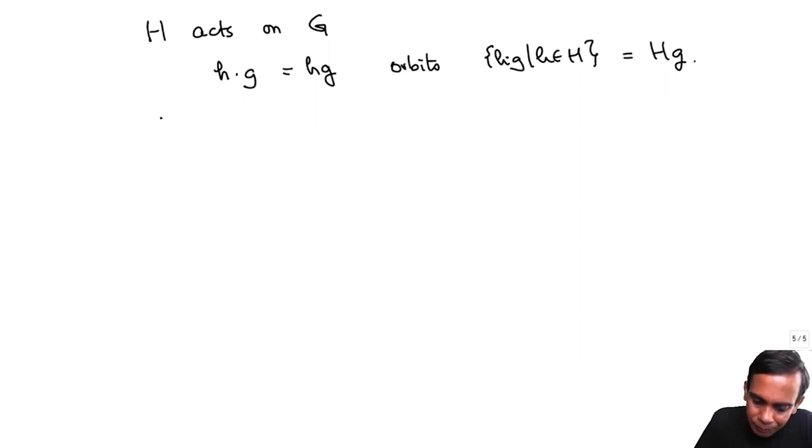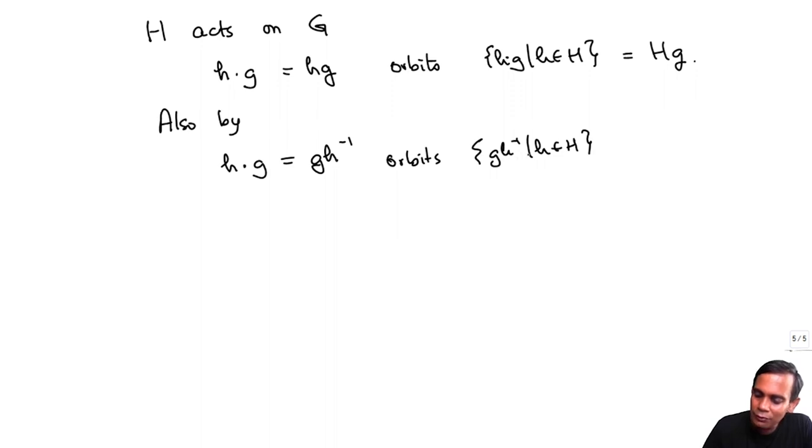So this is one action. There is another action of H on G: h dot g is g h inverse. I had mentioned this action when I defined a group acting on itself. There were two actions, the left multiplication action and the right multiplication action. This is the right multiplication action. Because we are writing h on the left here, we need to put an inverse there to make this work. And the orbits of this are g times h inverse where h is in H, but of course h inverse is in H if and only if h itself is in H. So this is the same as gH. So the right cosets and the left cosets are orbits for the action of H on itself by left multiplication and right multiplication respectively.